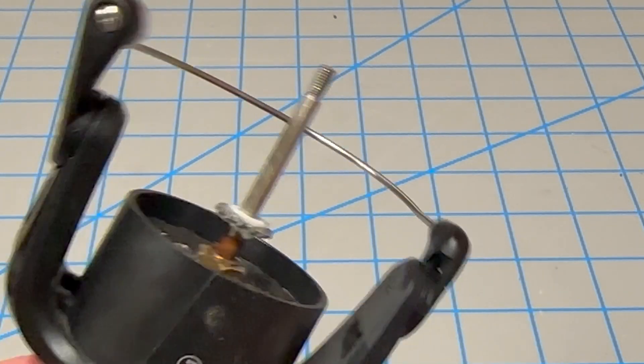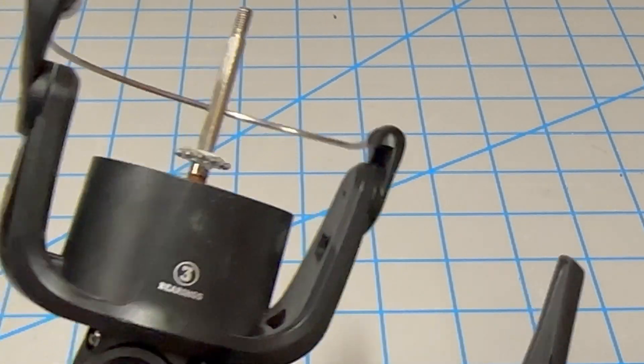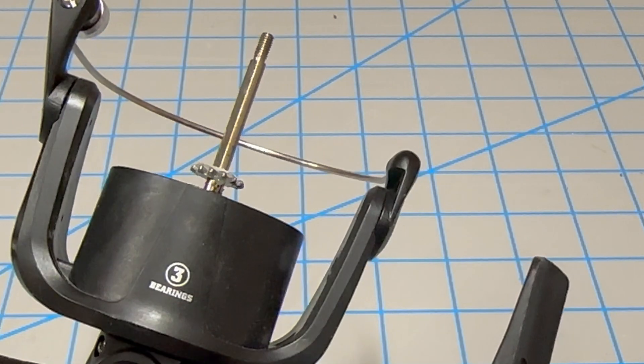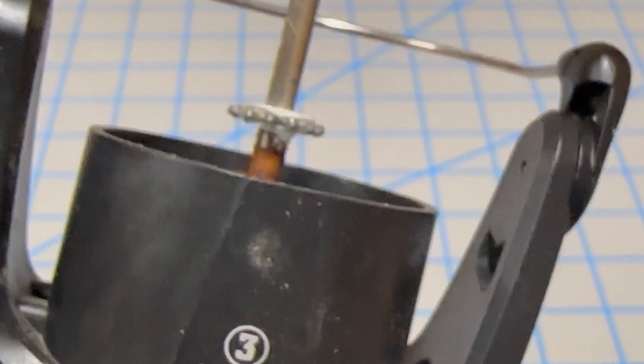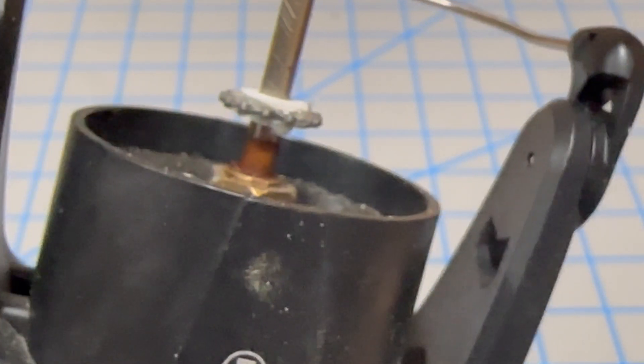This reel hasn't been outside much. It's been very lightly used outside and it has been in salt water. You can already see some rust and corrosion on the spindle post here.